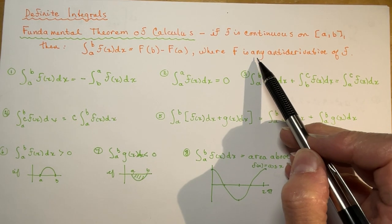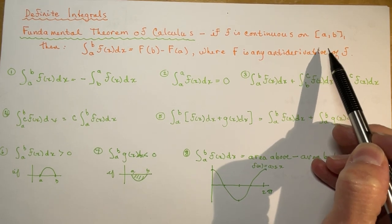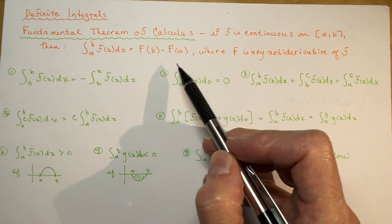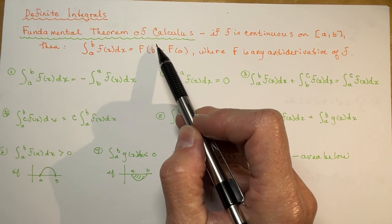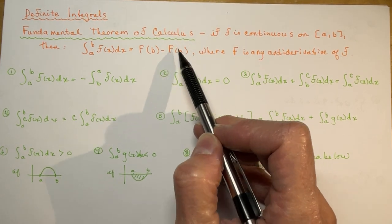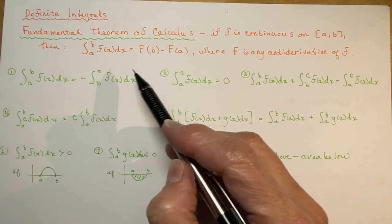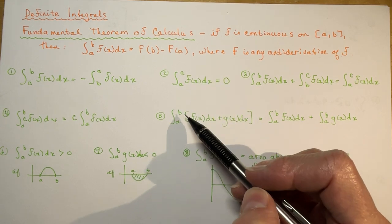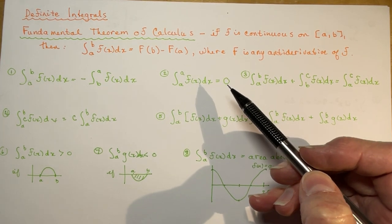Now you might say, what do they mean by 'any antiderivative'? Well, remember when we took the antiderivative and we had to say plus c? If you put plus c into F(b) and F(a) plus c, but you're subtracting, you can see that the c's are going to cancel out anyway — it's just going to be plus c minus c, so no c.